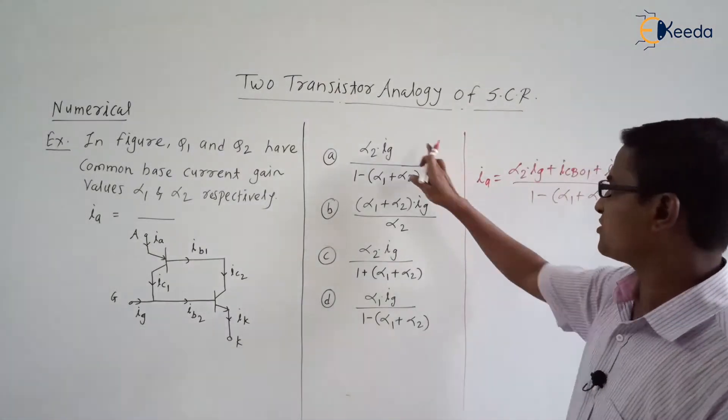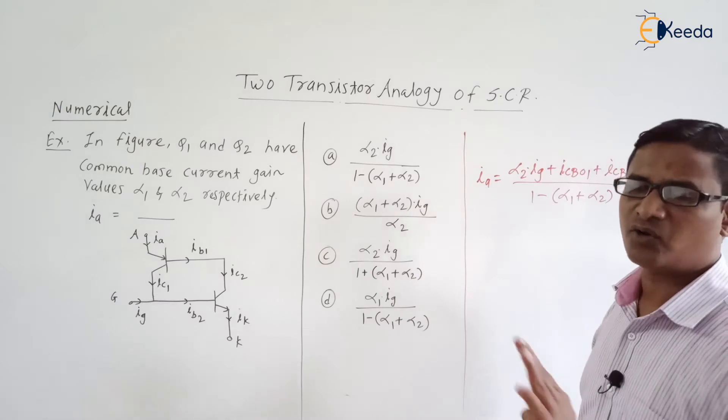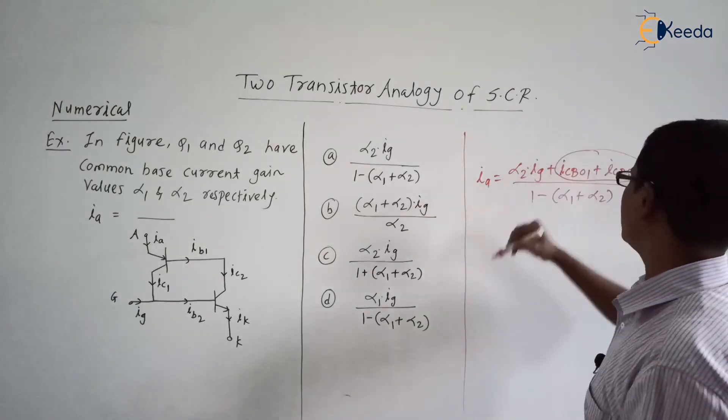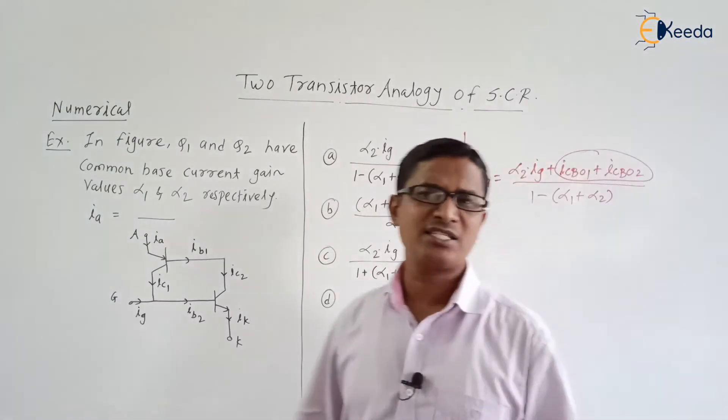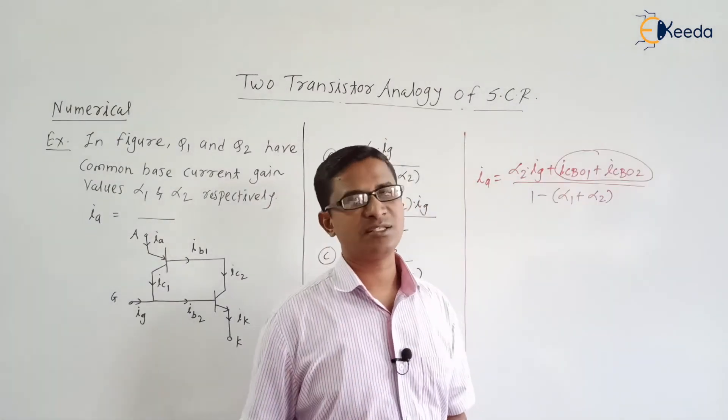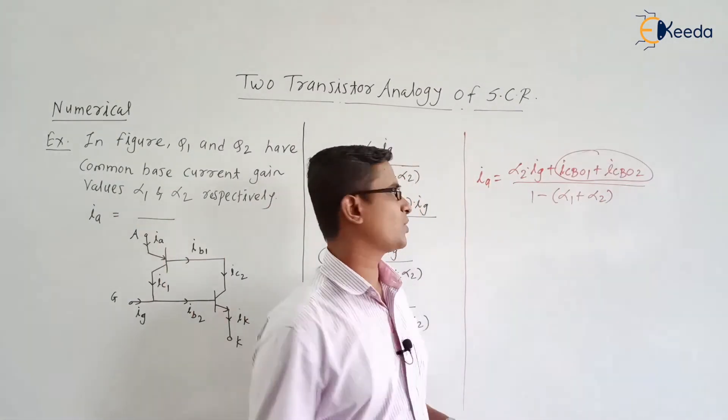Now in this expression or in the four options they have not mentioned anything about the IcbO1 plus IcbO2. What is the IcbO1 and IcbO2? These are the leakage currents, means indirectly they have neglected the leakage currents.